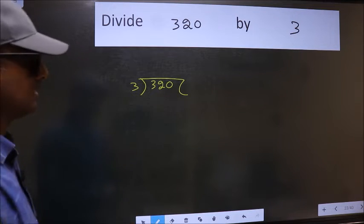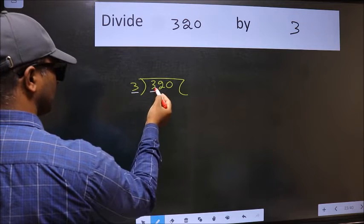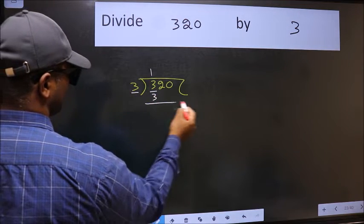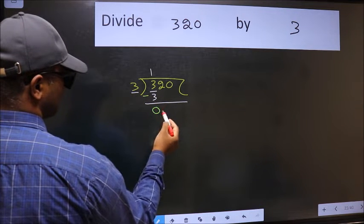Next, here we have 3. Here also 3. When do we get 3 in 3 table? 3 once 3. Now, we should subtract. We get 0.